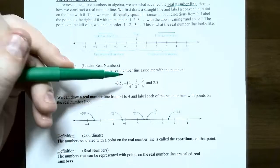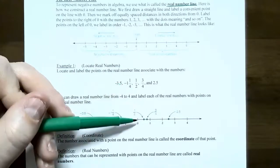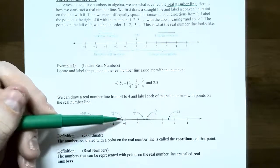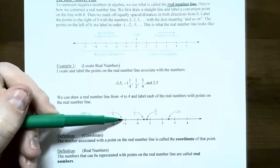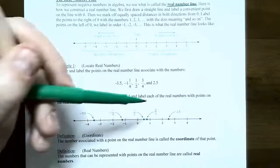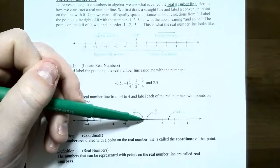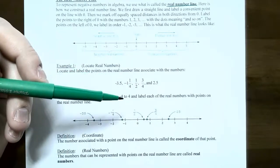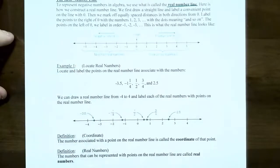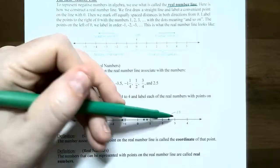Negative 1 and 1 fourth is a negative number, so it's on the left side of the origin — a little bit more than negative 1, a quarter of the way past negative 1, between negative 1 and negative 2. Positive 1 half is on the right side of the origin, halfway between 0 and 1. Three quarters is also between 0 and 1, three quarters of the way between 0 and 1. And 2.5 is halfway between positive 2 and positive 3.